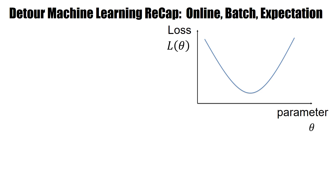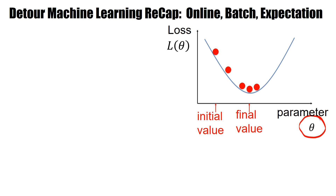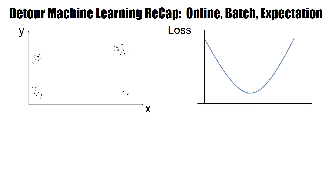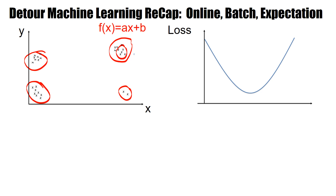In machine learning there's a loss function, and the loss function varies as a function of the parameters of the network model. Consider a specific example where we have about 20 data points distributed unevenly, and our task is to approximate them by a linear function: the output y should be a linear function of x, a times x plus b.